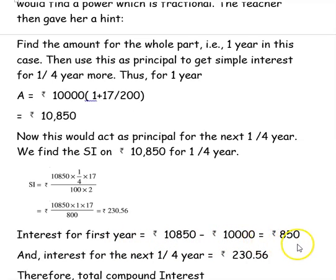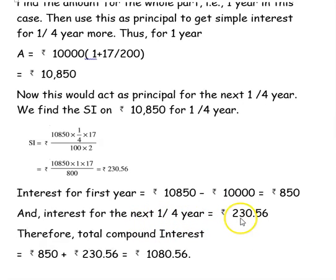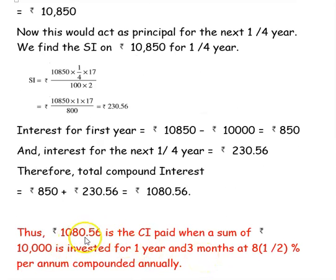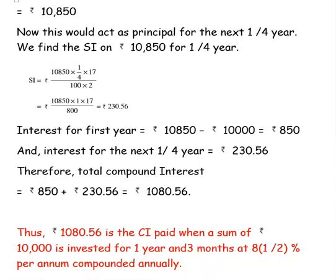The interest for the first year is 10,850 minus 10,000, which is 850. The interest for the 1/4 year is Rs. 230.56. So the total compound interest is 850 plus 230.56, which is Rs. 1,080.56. Thus, Rs. 1,080.56 is the compound interest paid when Rs. 10,000 is invested for 1 year and 3 months at 8.5% per annum compounded annually. Hope you have understood how to find the interest when compounded annually and also how to find the amount. Thank you for watching the video.